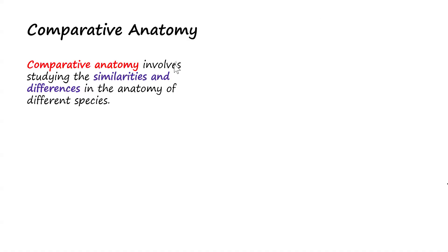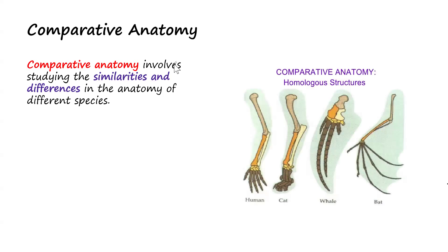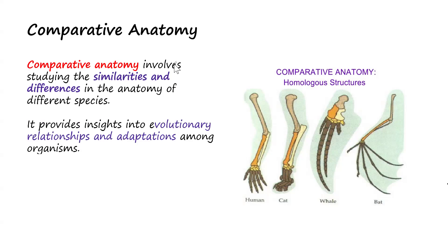Next is comparative anatomy. Comparative anatomy involves studying the similarities and differences in the anatomy of different species. For example, comparing humans, cats, and other animals — it studies what similarities and differences exist among different species of living organisms, examining what structures we have as humans and what also exists in cats or other animals.